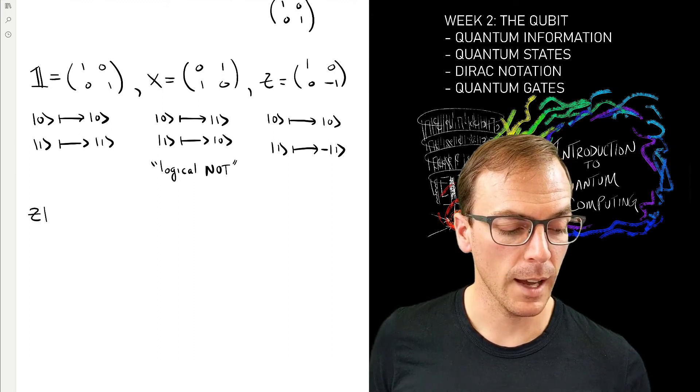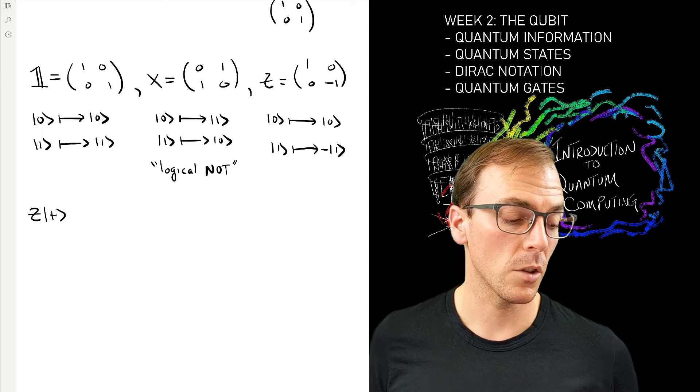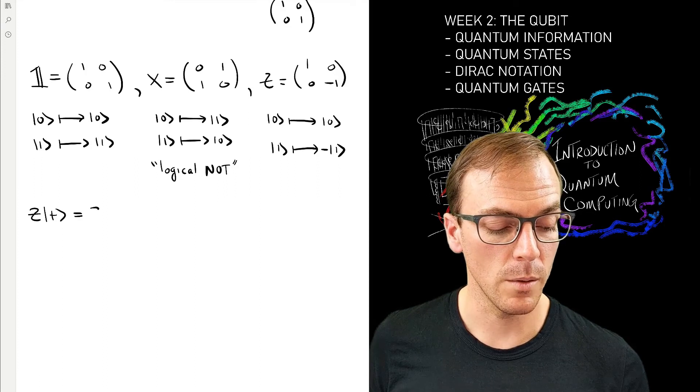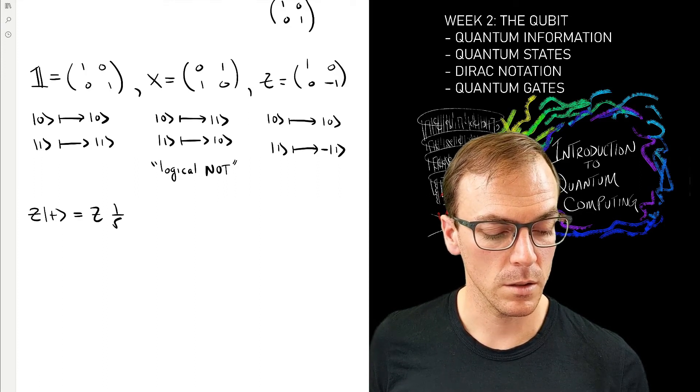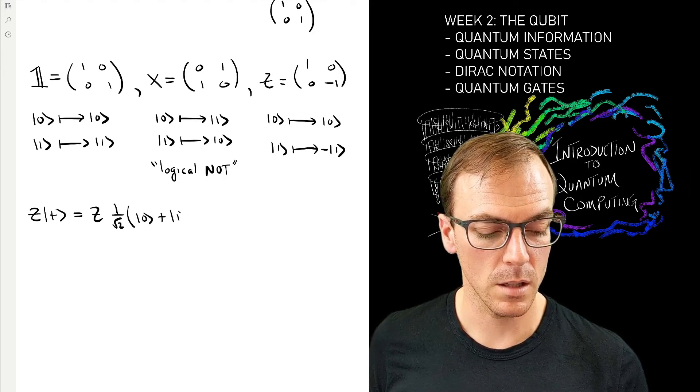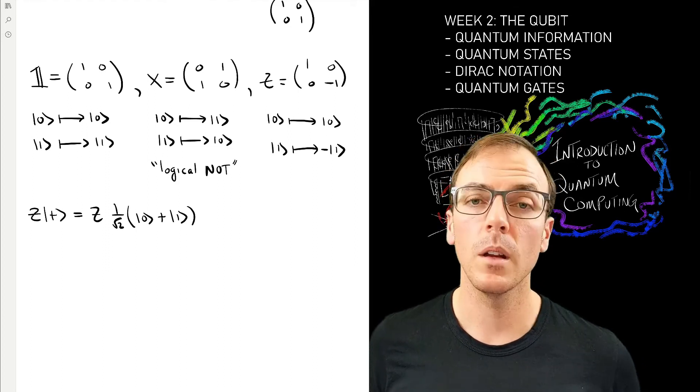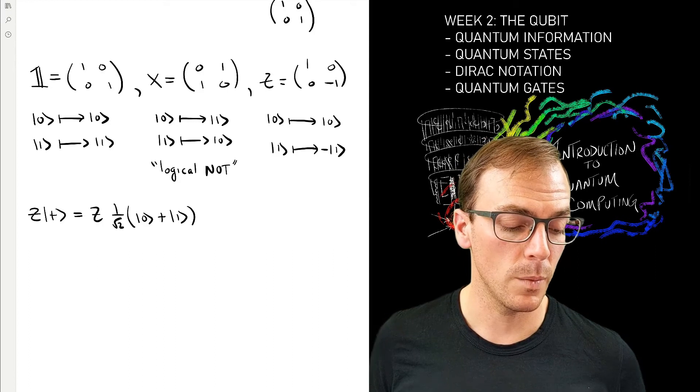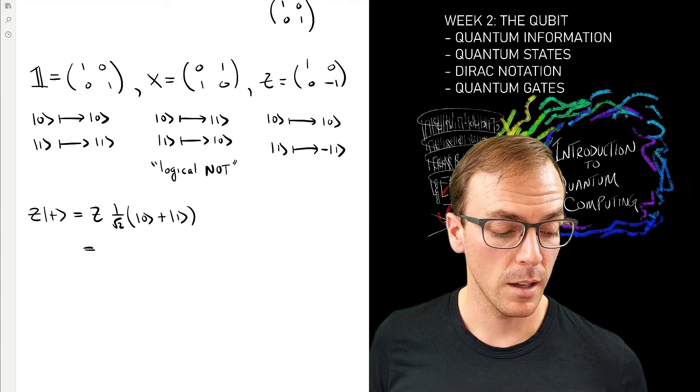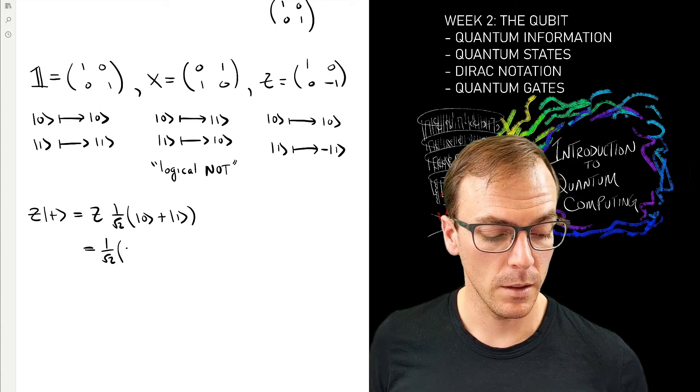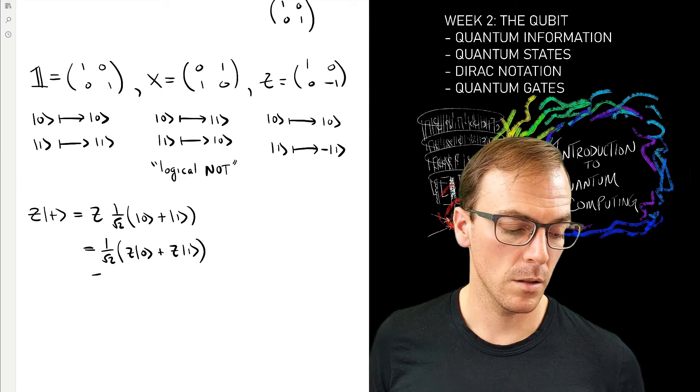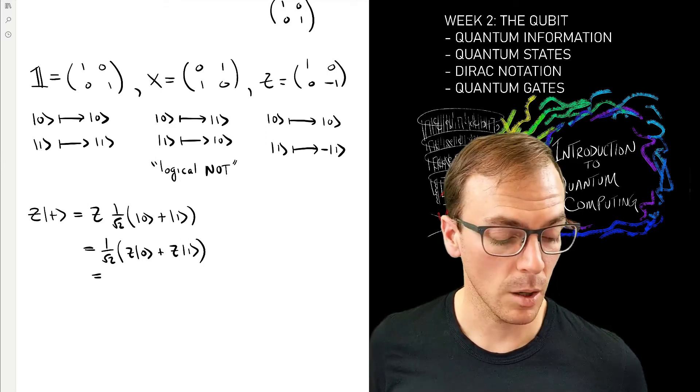If I look at the circuit or operation where I start in this plus state that we saw last time, I have Z acting on the plus state, which is |0⟩ + |1⟩ with this 1/√2 coefficient in front of each basis element. Because matrices are linear, I can apply the Z to each of the elements of the basis or any linear combination.